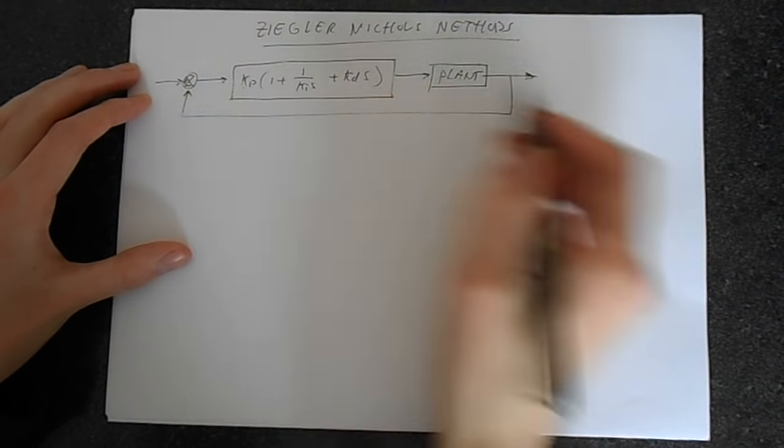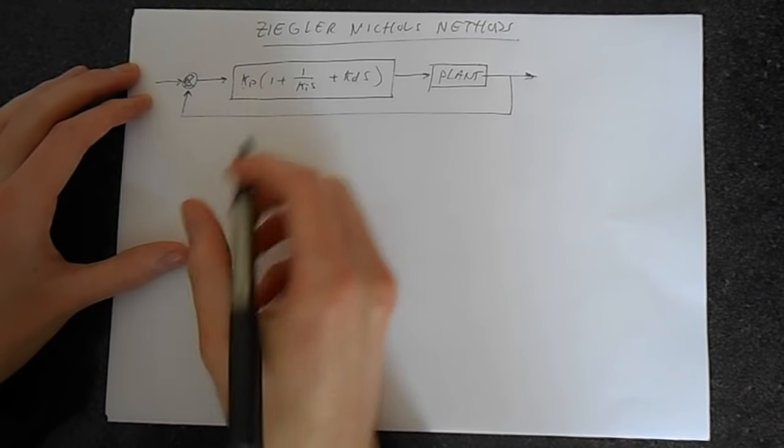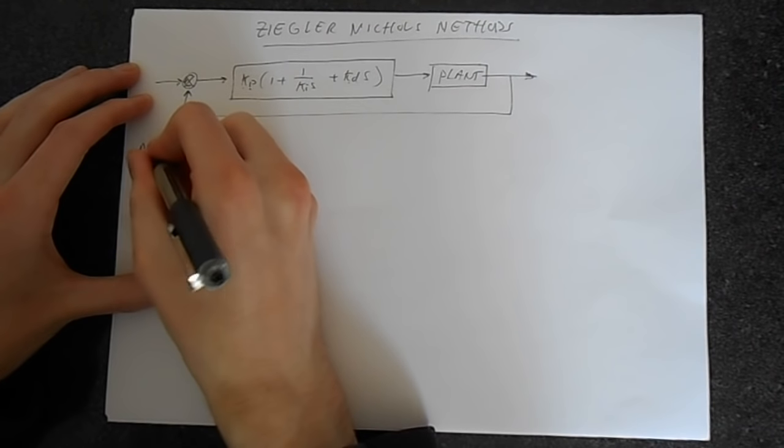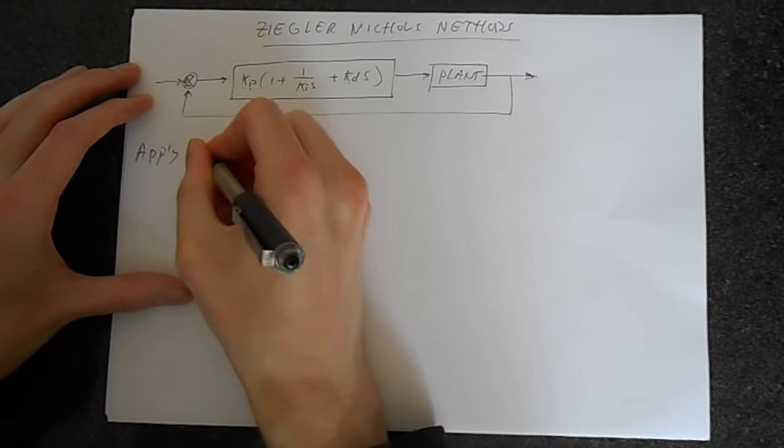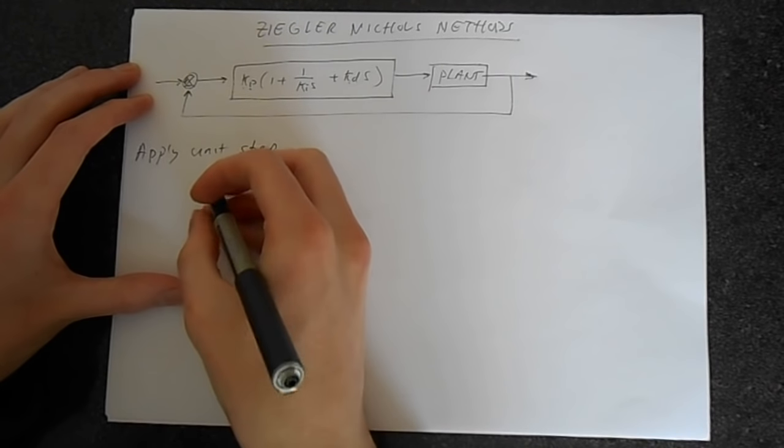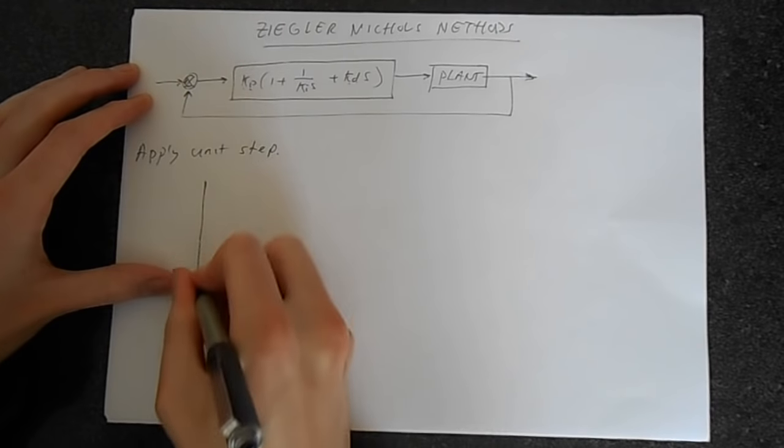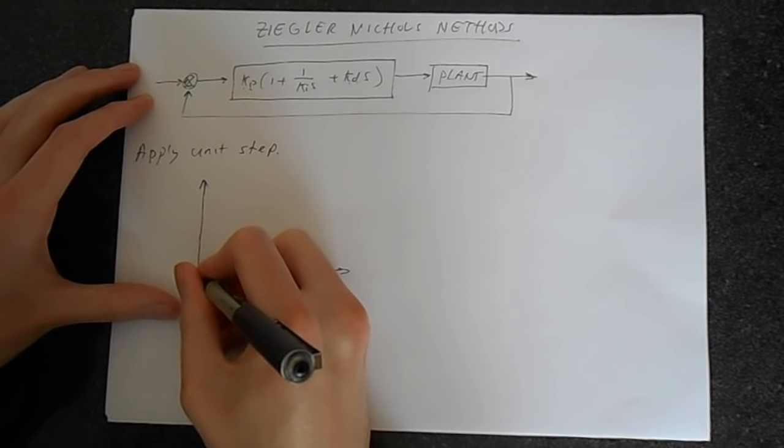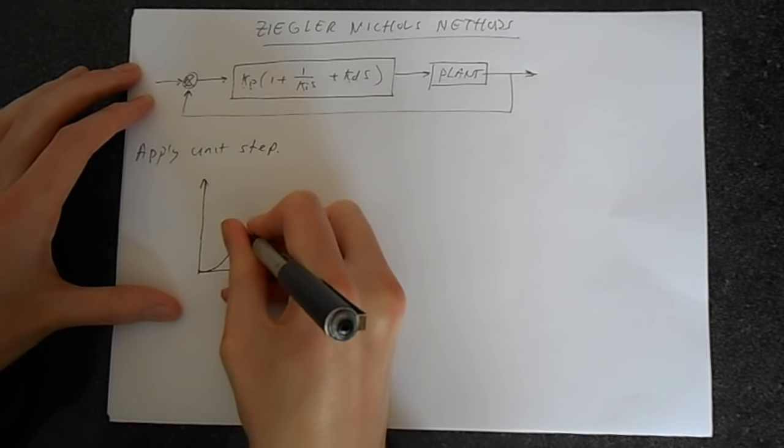Okay, so how do we tune this system? How do we determine the values we've got here? Well, let's apply a unit step input. And when you do this, you'll get a response that looks... Drawing's not very good, but let's give this a go. A response that looks something like this.